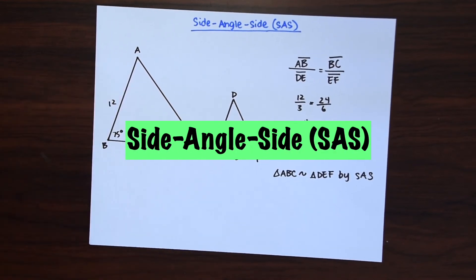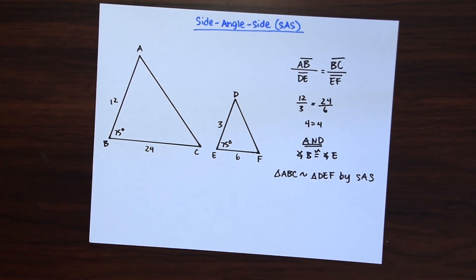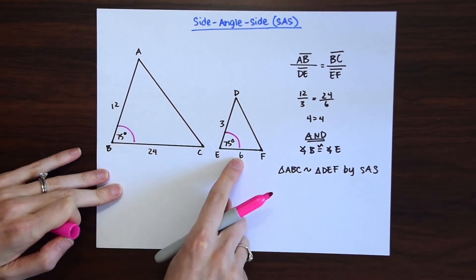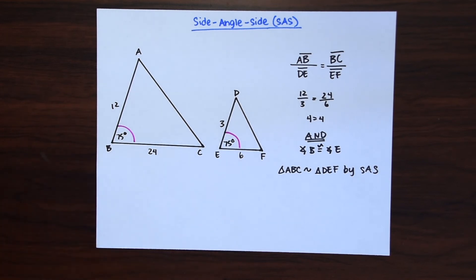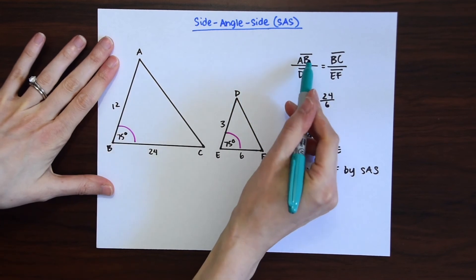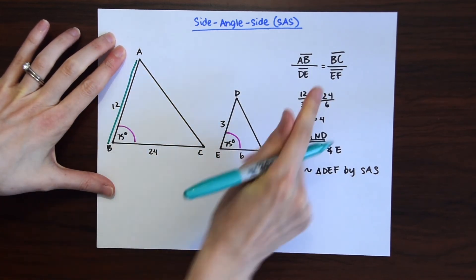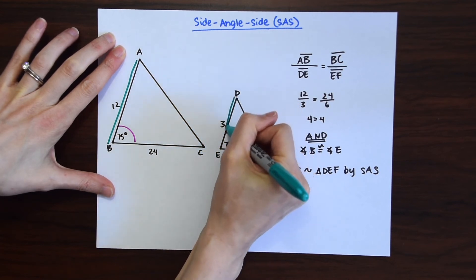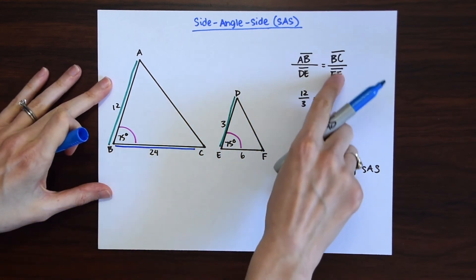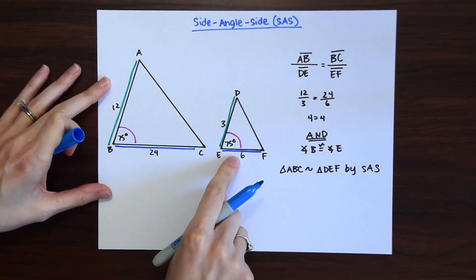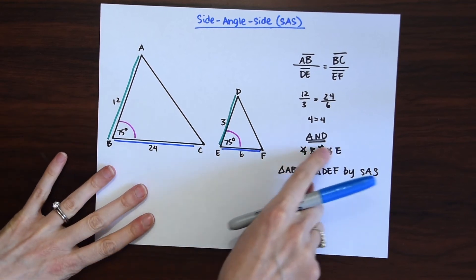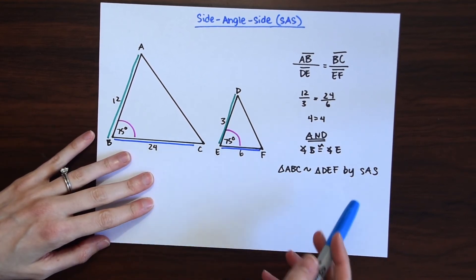For side-angle-side similarity, we look for a congruent angle: angle B is 75 degrees and angle E is 75 degrees, so those are congruent. Then the sides surrounding that angle must be in proportion between the triangles. AB is 12 and the corresponding side DE is 3; dividing gives 4. The base BC is 24 and the corresponding base EF is 6; dividing also gives 4. We have two sides in proportion and a pair of congruent angles, so triangle ABC is similar to triangle DEF by side-angle-side.